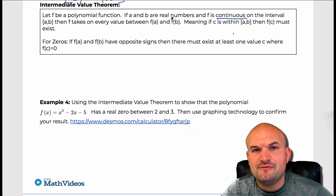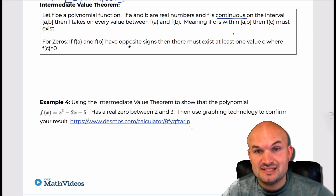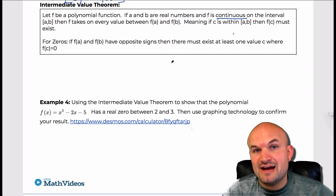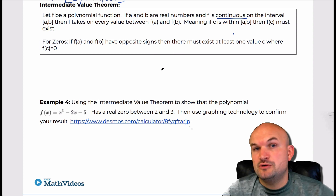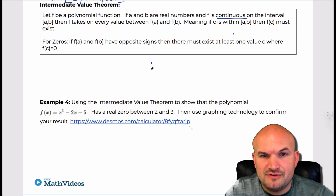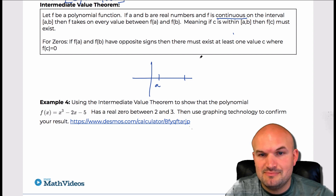So if we have an interval from A to B, and F of A and F of B have opposite signs, then there must exist a value C where F of C is equal to zero — basically meaning there's going to be a zero. We can look at this graphically: here's A and here's B, so there's our interval.